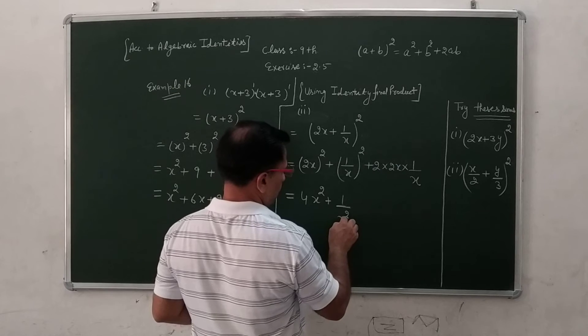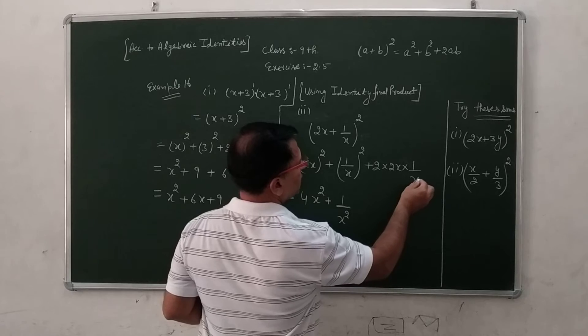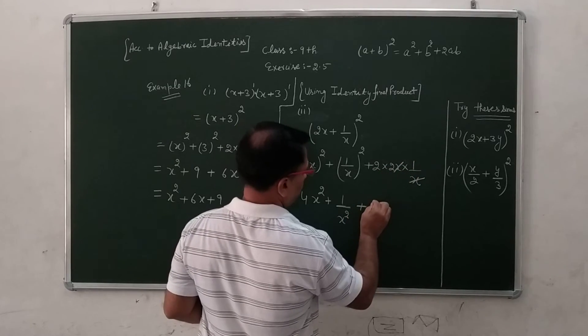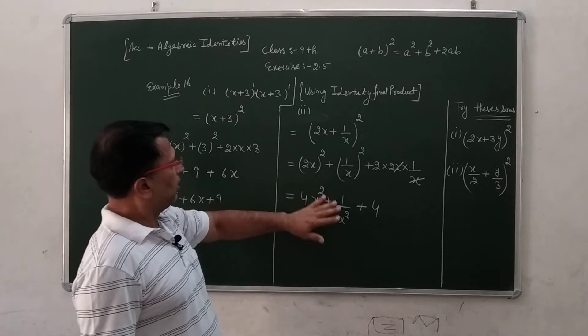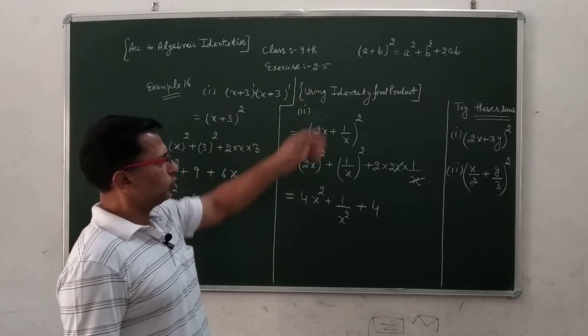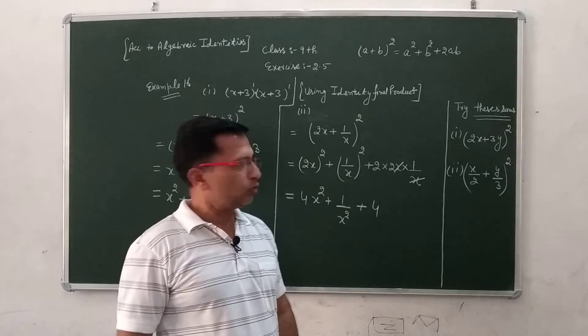Thik hai ye aise karenge, upar is ka v square aur is ka v square, aur yahan jo cut dho, ye x x kar gaya, kya raha gaya 2, to yaha 4, yahan sara. It is according to our algebraic identity a plus b ka whole square. Is wala identity use in solving.